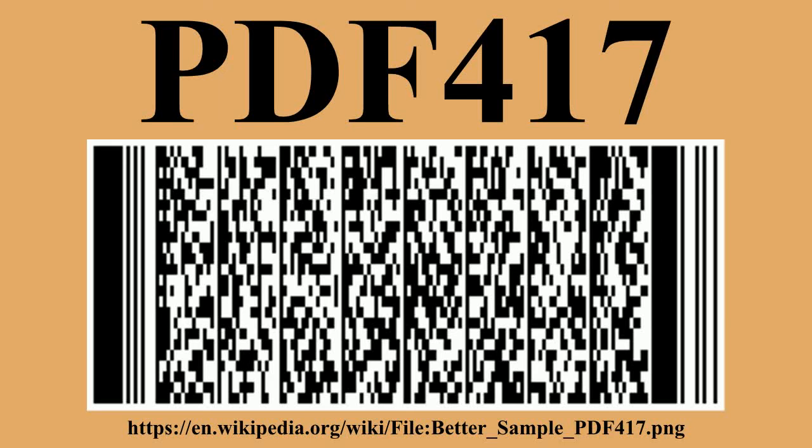PDF 417 is a stacked linear barcode symbol format used in a variety of applications, primarily transport identification cards and inventory management. PDF stands for Portable Data File. The 417 signifies that each pattern in the code consists of four bars and spaces, and that each pattern is 17 units long.